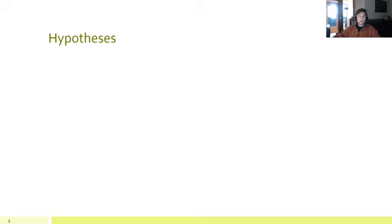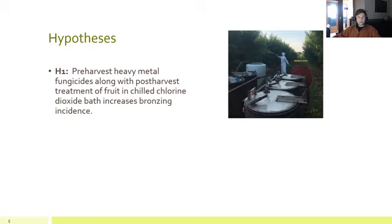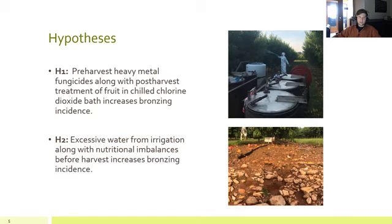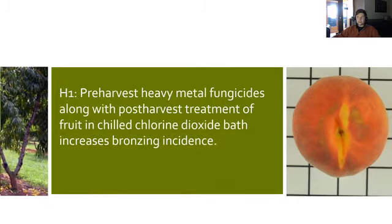For the hypothesis, we were really just trying to induce bronzing since it hasn't been studied very heavily in the past. We took a shotgun approach where we checked a lot of different avenues to see what can cause and induce bronzing. Our major hypothesis is that pre-harvest heavy metal fungicides along with post-harvest treatment of fruit in a chilled chlorine dioxide bath increases the incidence of bronzing. Our second hypothesis is that excessive water from irrigation along with nutritional imbalances before harvest increases bronzing incidence.